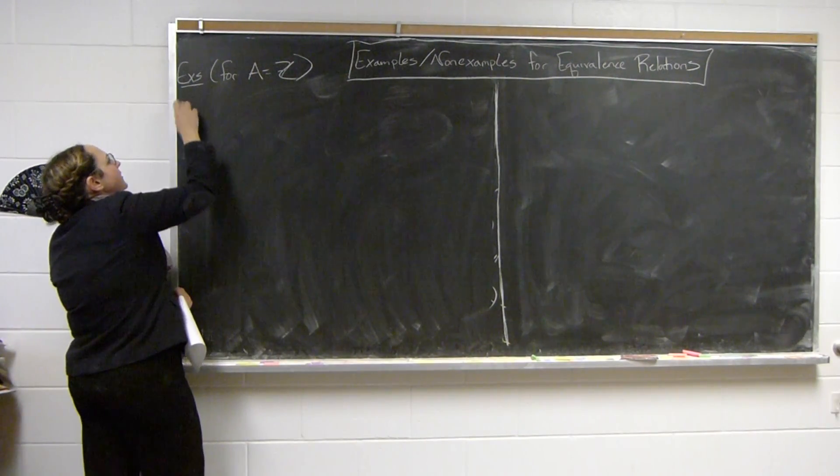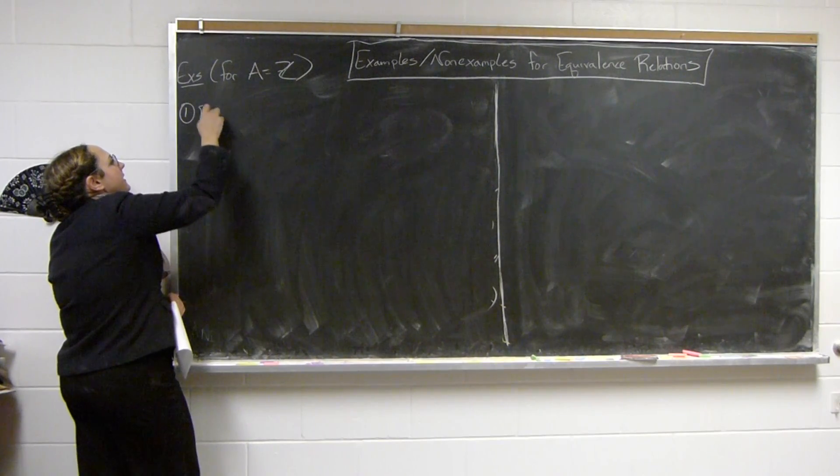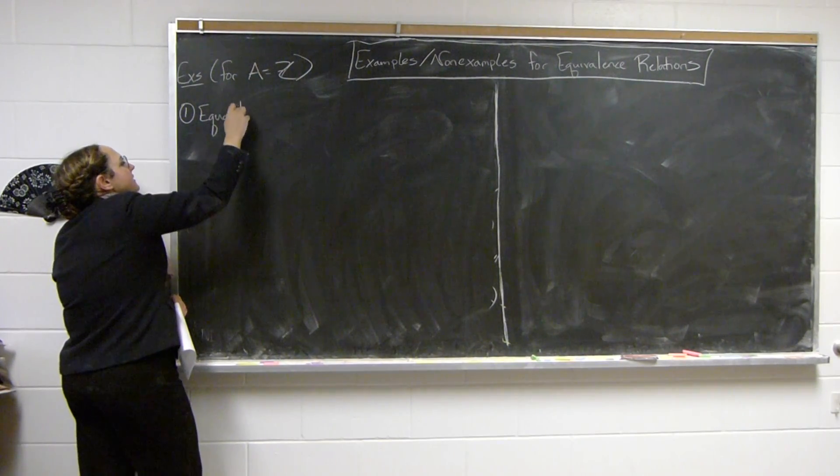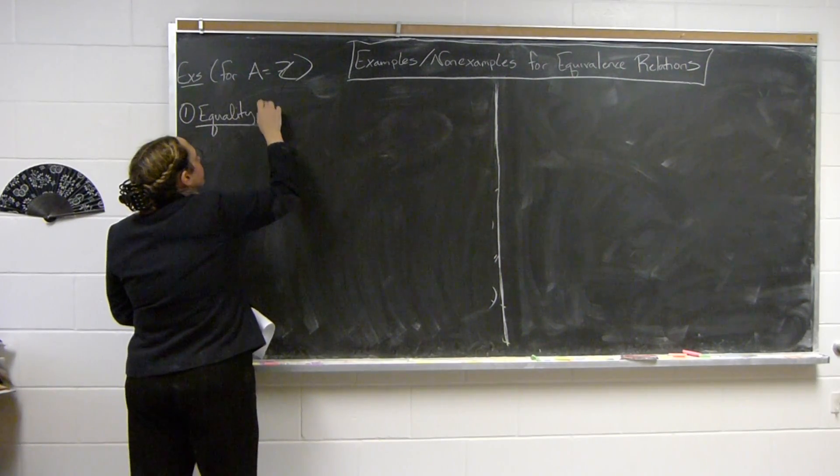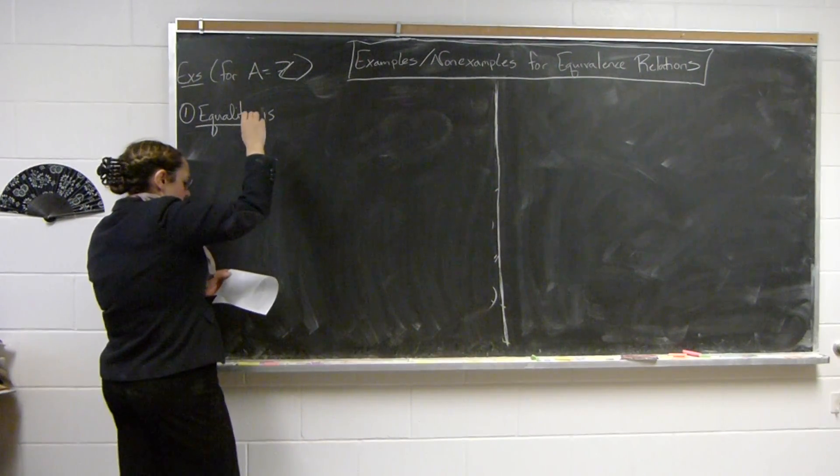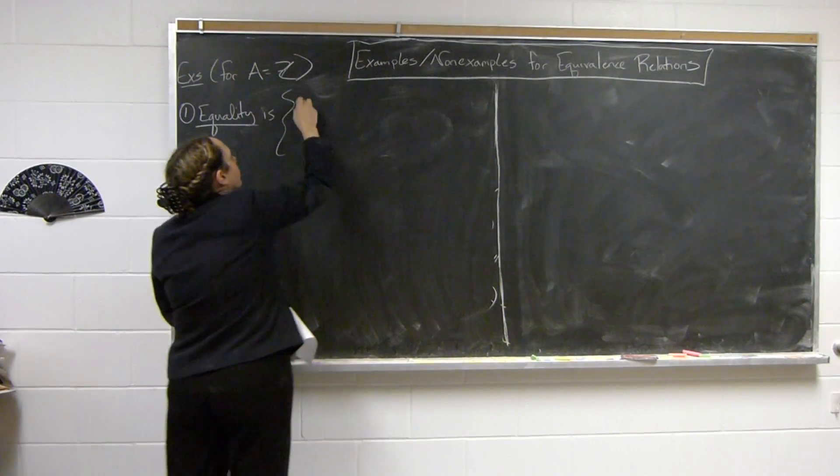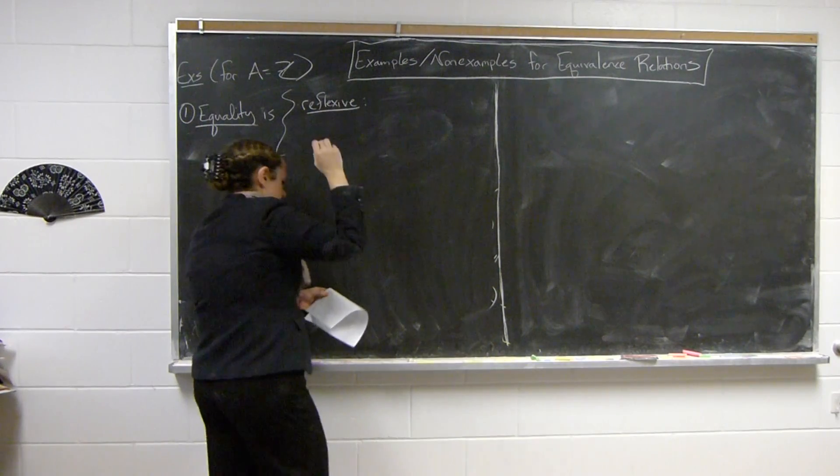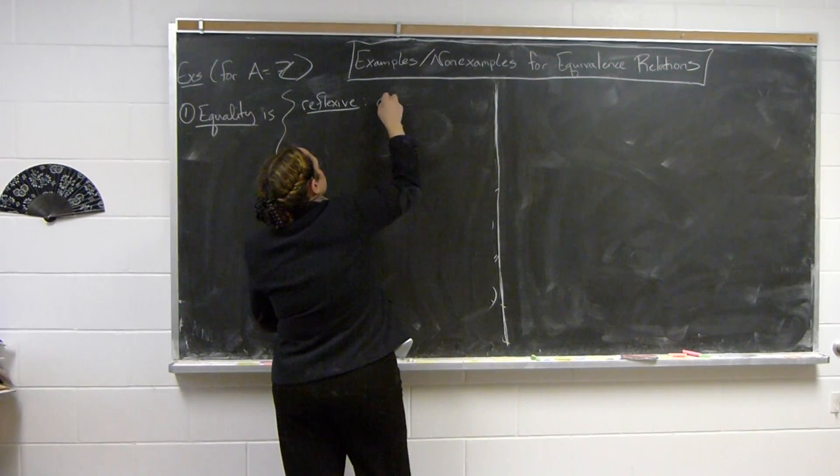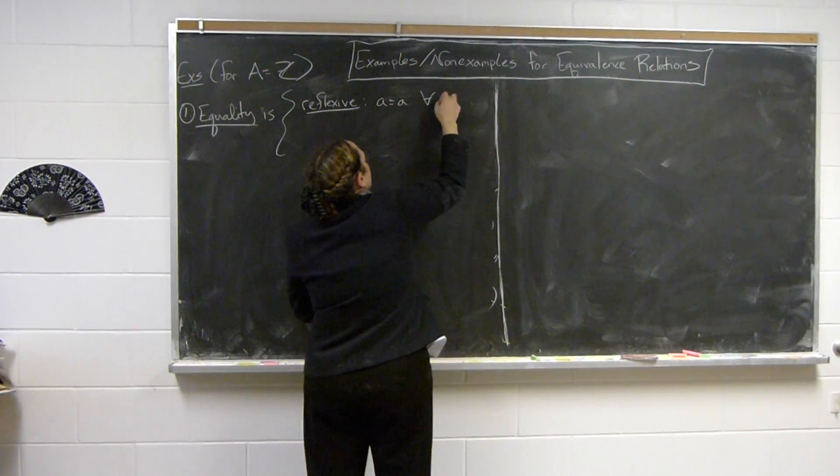So here's the first one, so let's focus in on equality. Now we want that this is an equivalence relation because this is what we're supposed to be generalizing. So equality is, so we have it's reflexive. We always have that A is equal to itself for all integers.